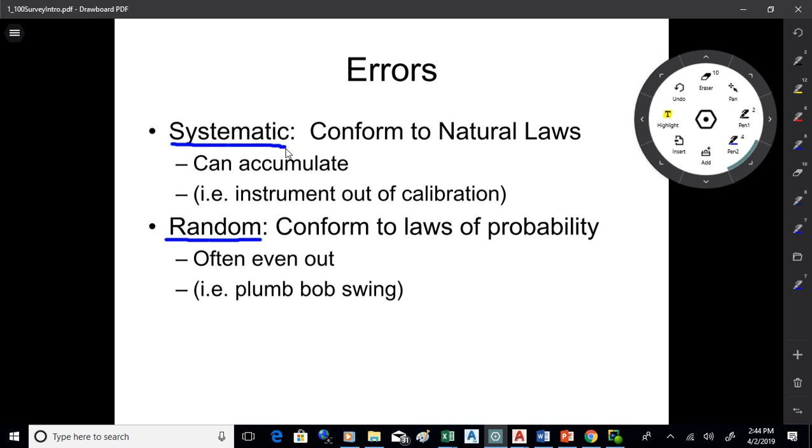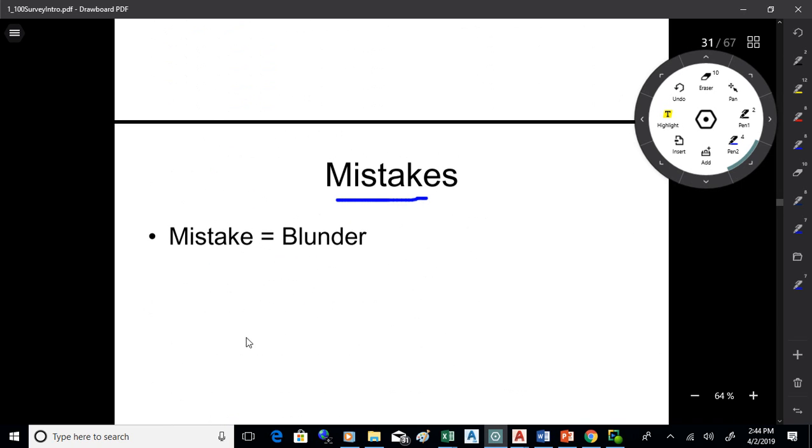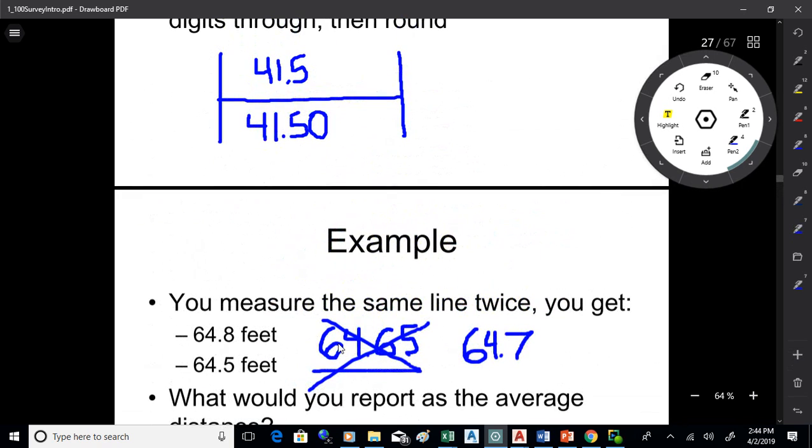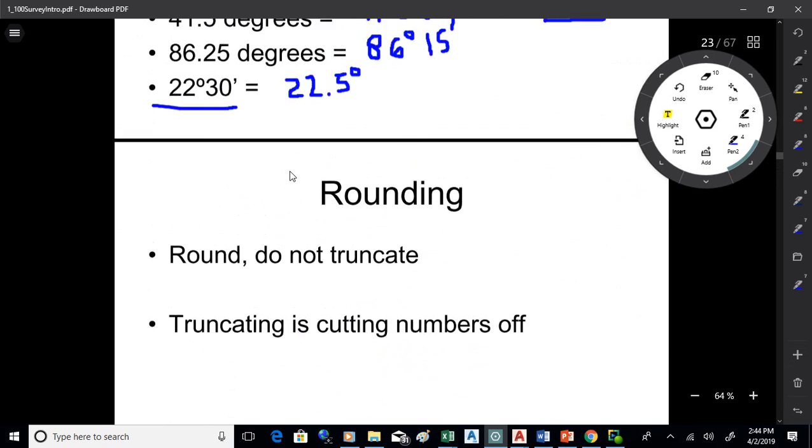We want to remember that because that's something we want to be thinking about a little bit when we survey. People that do this for a living, they are very conscientious about how they set their equipment up and how they measure. They want to reduce the errors. Now a mistake is not an error. A mistake is a blunder. A mistake is writing down the wrong number.